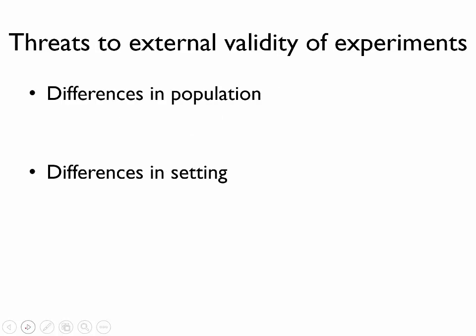So based on the definition of external validity, we might be concerned when we are attempting to apply the results of an experiment to either a population or a setting which is very different. Let's go through each of those in turn. So why might we not be able to generalize the results of an experiment to another population?